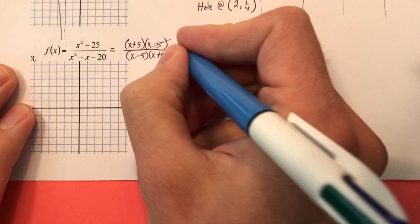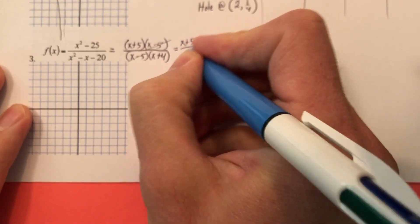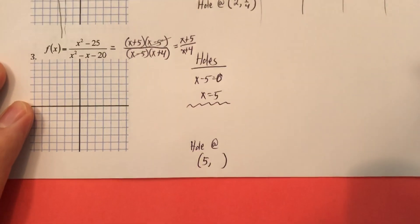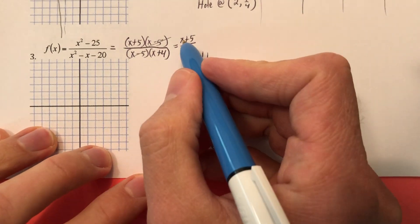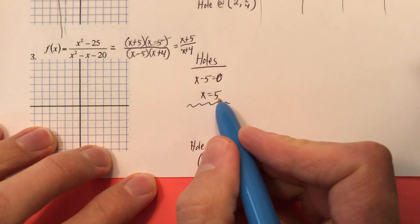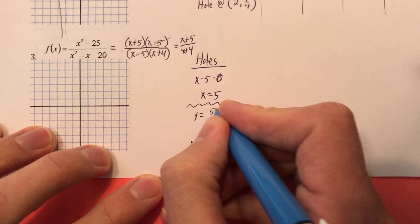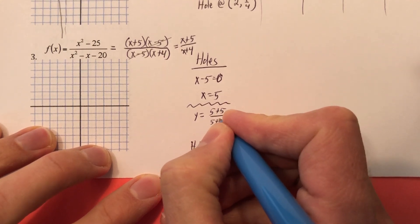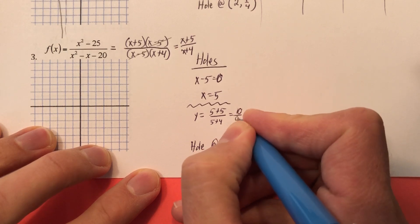Where is it? Well, let's go to the last step up here, and we'll say, well, this is really X plus 5 over X plus 4. And knowing that it's X plus 5 over X plus 4, then we're going to plug in 5 for X, right? Because X equals 5. So we're going to say, well, the Y component is going to be 5 plus 5, 10, over 5 plus 4.